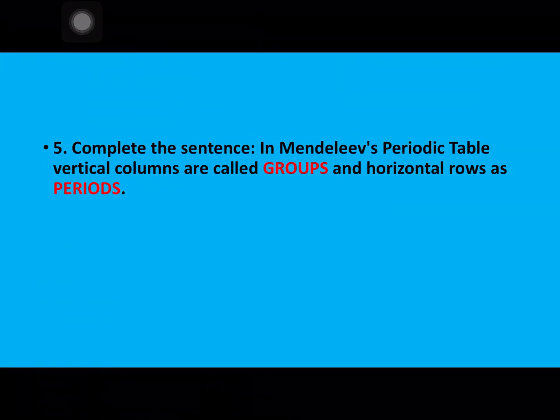Question number five, fill in the blanks: In Mendeleev's periodic table, vertical columns are called groups and horizontal rows are called periods. So hope you liked the worksheet. Thanks for watching. Do like.